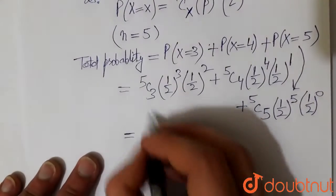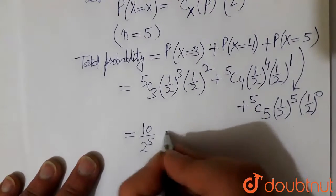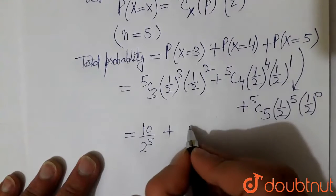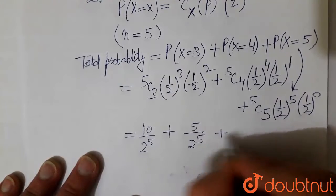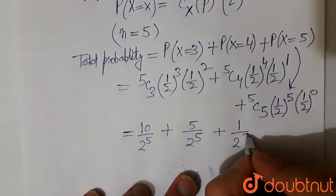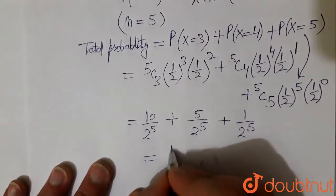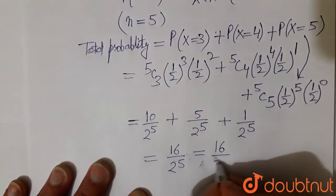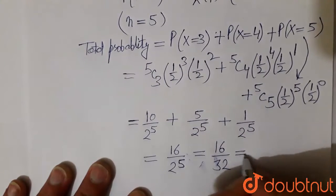So this becomes 5C3 is 10, so 10 divided by 2 to the power 5, plus 5C4 is 5, divided by 2 raised to power 5, plus 5C5 is 1, divided by 2 raised to power 5. So this becomes 16 divided by 2 to the power 5.